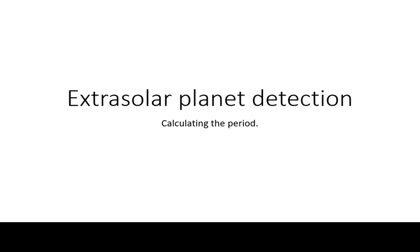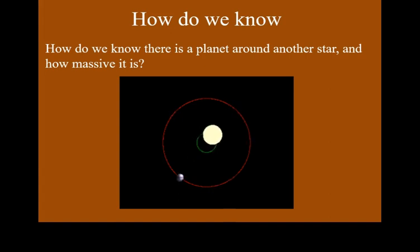Here is how you calculate the period of orbit of an extrasolar planet from the radial velocity graph. Remember, we detect extrasolar planets not by directly seeing them, but because they tug on their star.